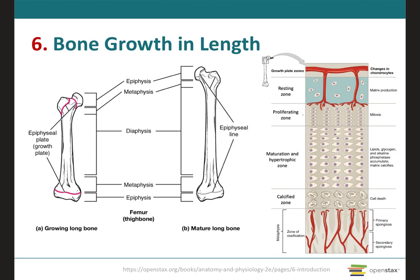As a bone grows, the chondrocytes will proliferate on the epiphyseal side of the plate, and new chondrocytes will replace older ones, which are then destroyed by calcification. Therefore, the cartilage is replaced by bone on the diaphyseal side of the plate. In this way, the thickness of the epiphyseal plate remains relatively constant, but the bone on the diaphyseal side increases in length.